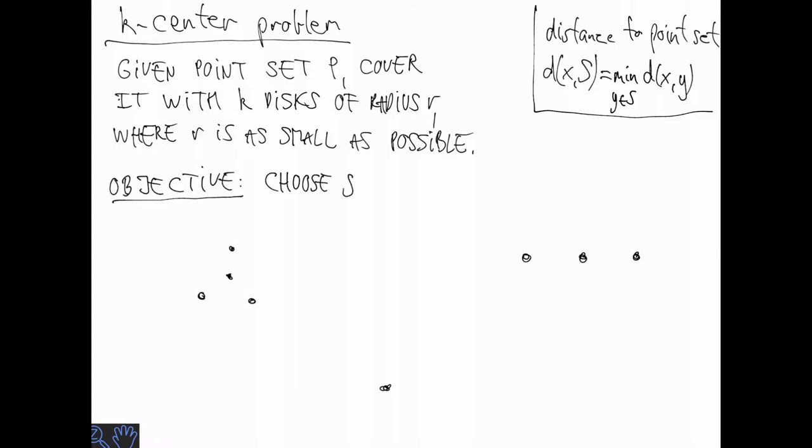With this definition, the objective of the k-center problem is to choose a set s, which is a subset of p, such that s has k points, and the maximum distance from x to s is minimized where x ranges over the point in p.